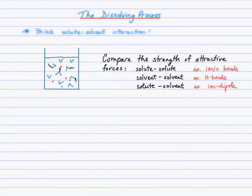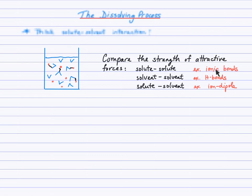You've seen from our solubility guidelines that not all ionic compounds are soluble in water — some have very low solubility. In those cases, the ionic bonds are significantly strong enough that very few ion-dipole attractions form, and so the bulk of the ions remain bonded to the other ions in the crystal lattice.